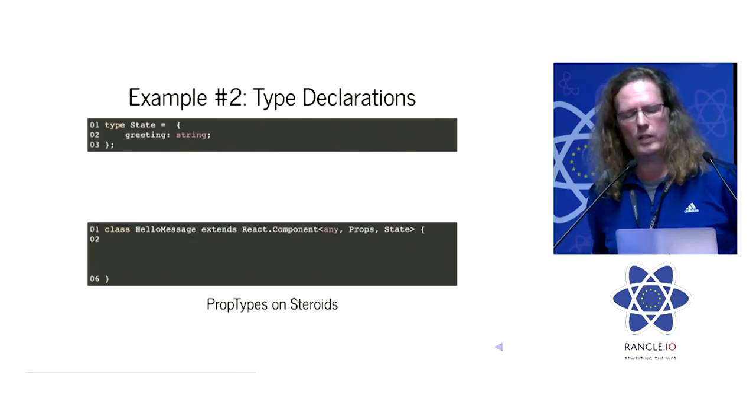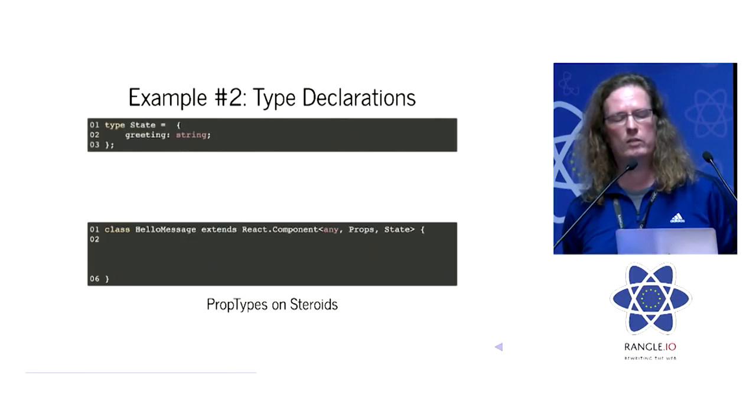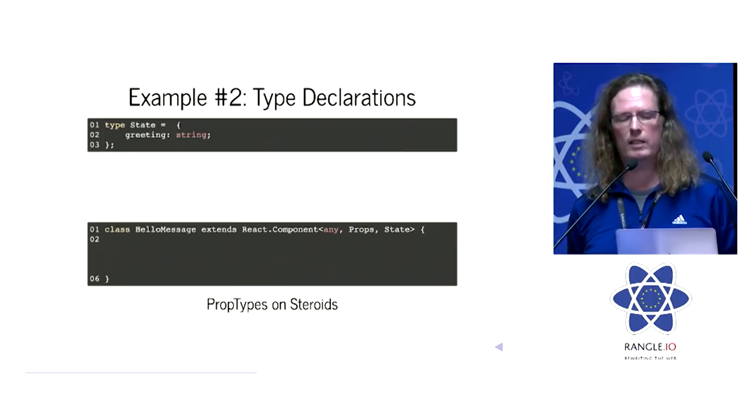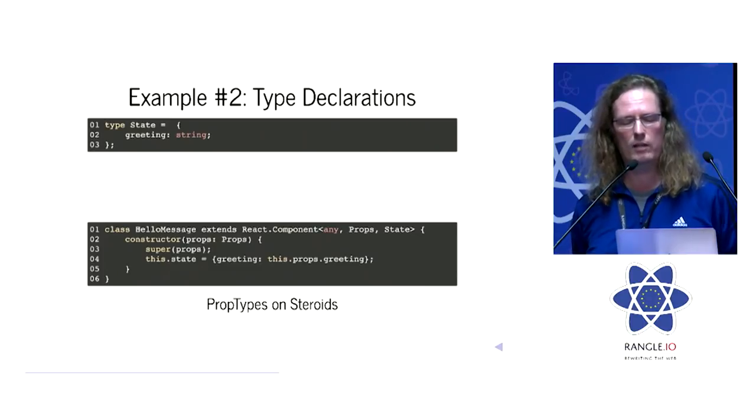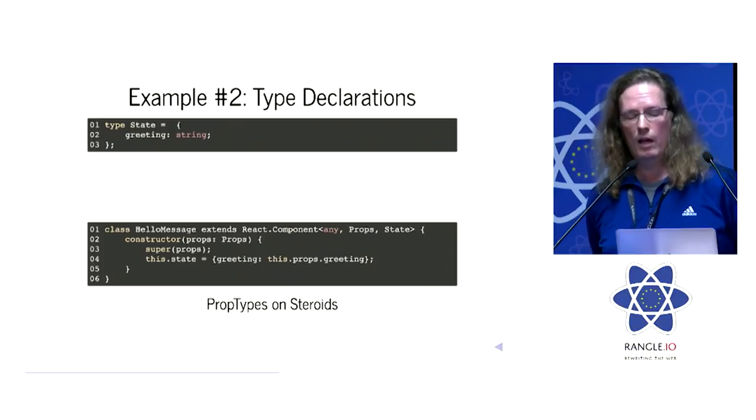How does a type like this look like? State is a type and it tells me this thing, that object that I'm supposed to handle as state, has one property: greeting, and that greeting is of type string. If I do something like this in the constructor, I'm initializing the state. If I pass in a greeting, I have to make very sure that this thing I'm passing in there is actually of type string.